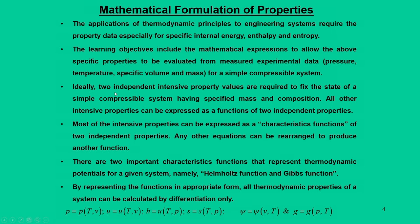In order to define or fix the state of a system in thermodynamic coordinates for simple compressible systems, we need two independent intensive properties, and they can be expressed in terms of any other two independent properties. If we have pressure P, temperature T, and specific volume V, then pressure can be expressed as a function of volume and temperature, volume can be expressed as a function of pressure and temperature, and so on. In addition to this, we can also express some characteristic functions, which we are going to introduce in this module.